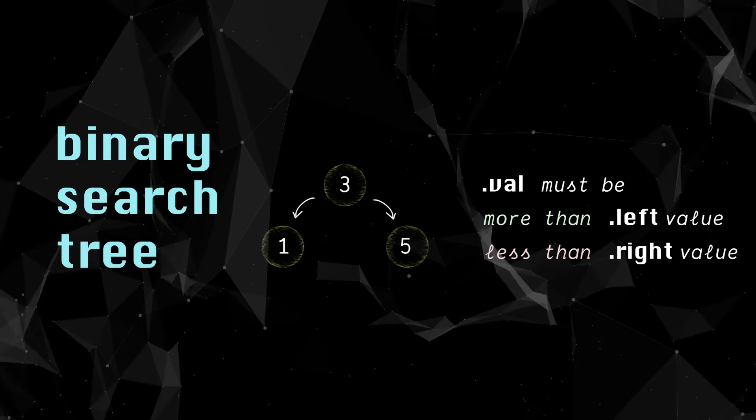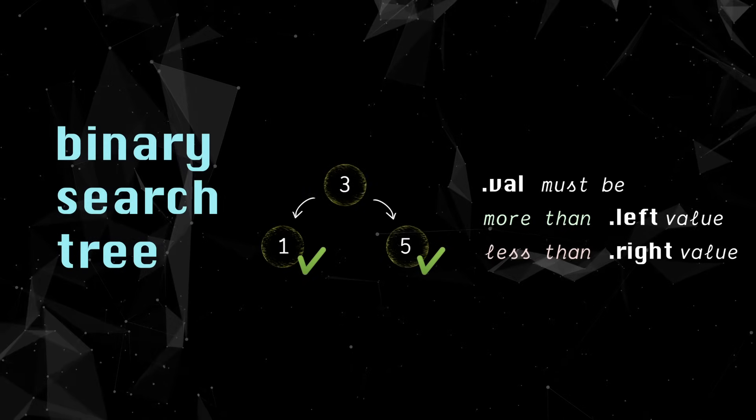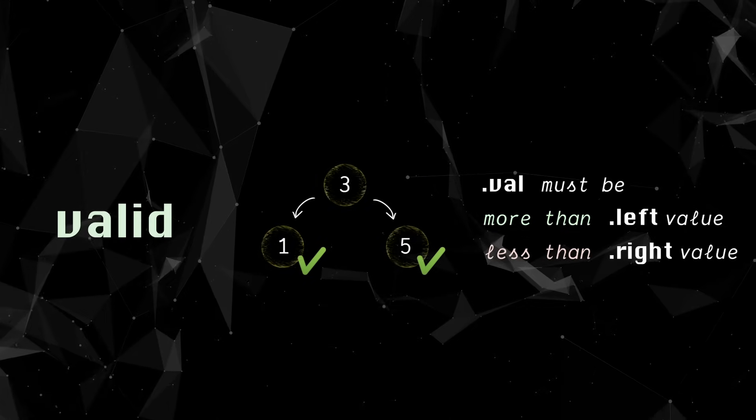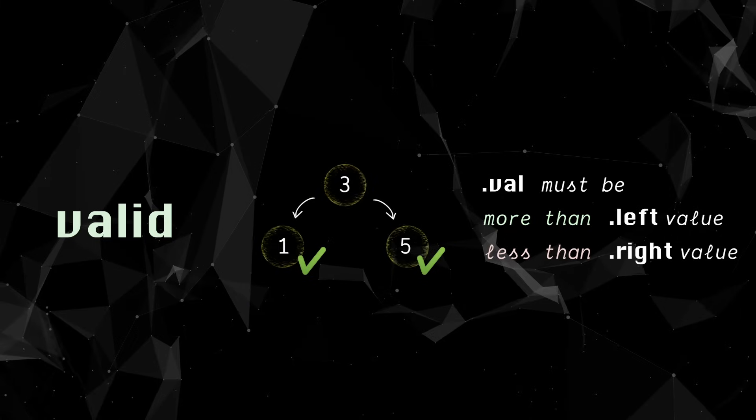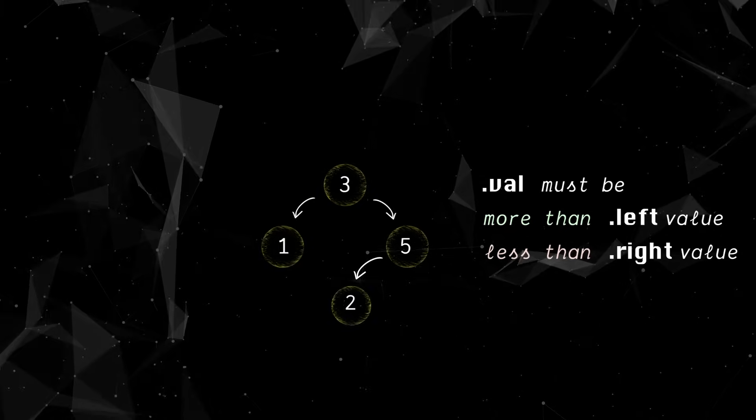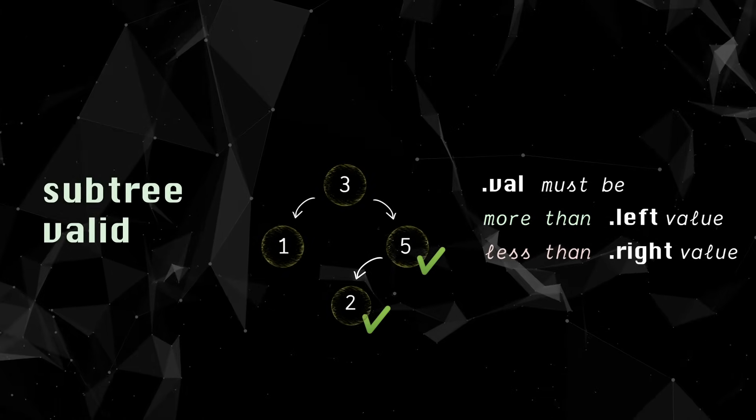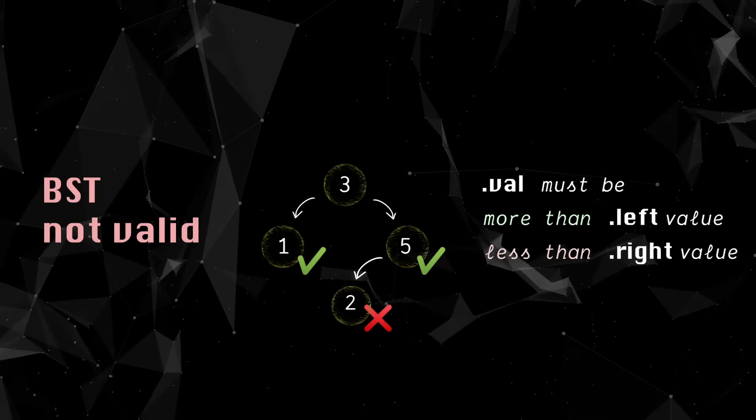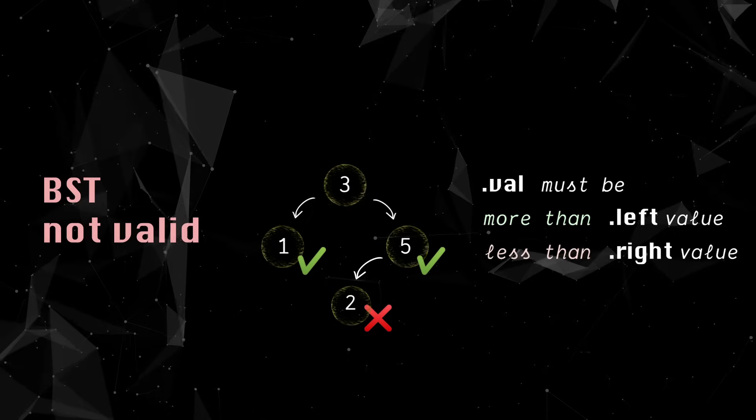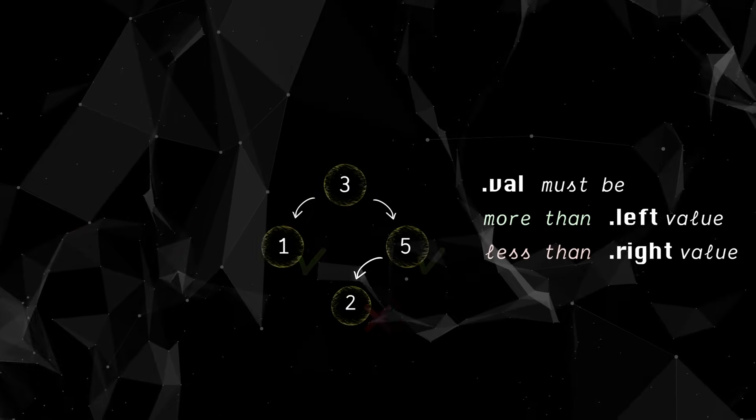So in this tree, three is more than one and less than five. So we can call this a valid binary search tree. Not only that simple rule, but this greater on the right, less on the left principle has to be true for the entire tree. Let me explain. If I put a node with value two as five's left child, our subtree with five and two passes. But unfortunately, we are breaking it within the greater context of the tree because it's down our right path and we can't have anything less than three down our right branch. And checking whether this condition is true for the whole tree is called validating the tree.